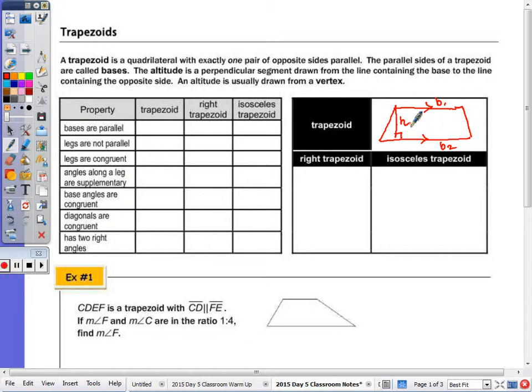So we can put a checkbox all the way across. The bases are parallel, and the legs are not parallel. The legs are the sides or the non-parallel sides of the trapezoid. Legs are congruent. So the legs, again, are those non-parallel sides, and they're only congruent in the isosceles trapezoid. Angles along the leg are supplementary, so along any leg. Any two angles along the leg are going to be supplementary. Again, think about this as two parallel lines cut by transversal, same side interior are supplementary. So because of those parallel sides, angles along the leg are going to be supplementary in any trapezoid because of the parallel bases.